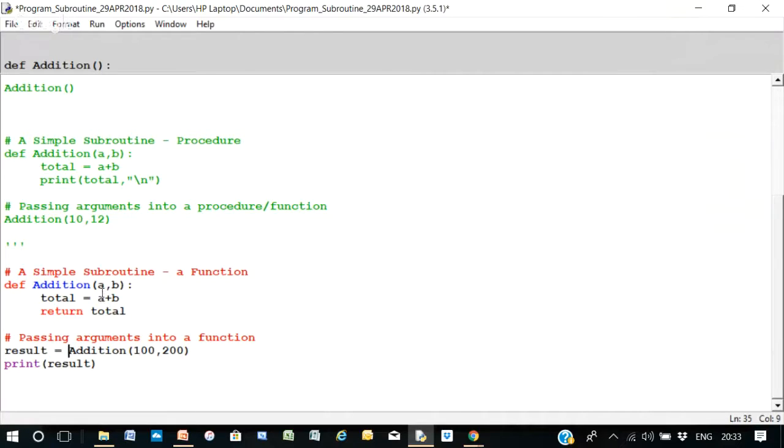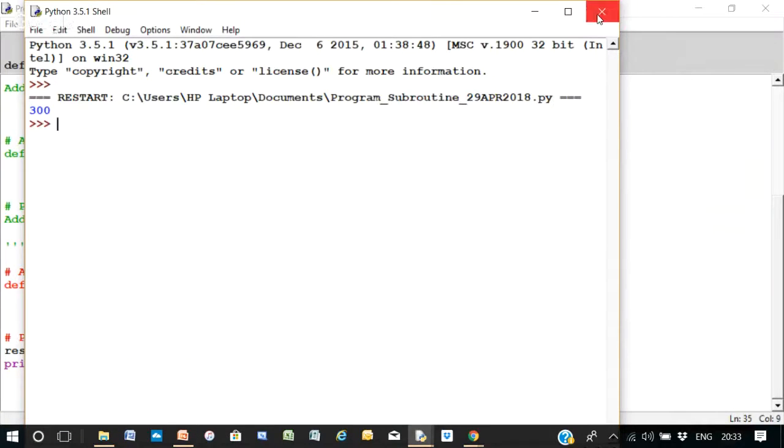So when we pass that in, a becomes 100, b becomes 200. We're passing in parameters, and then we're calculating total equals a plus b. So total becomes 300, and we return total. So we return the value of total, which is 300, to result. So result is 300, and we print result, which we expect as 300. 300, see?